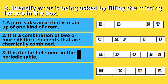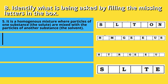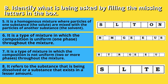Instruction B: Identify what is being asked by filling in the missing letters in the box. 1. A pure substance that is made up of one kind of atom. 2. It is a combination of two or more distinct elements that are chemically combined. 3. It is the first element in the periodic table. 4. It refers to materials that contain two or more chemical substances dispersed among each other with no chemical reactions occurring. 5. It is a homogeneous mixture where particles of one substance, the solid, are mixed with the particles of another substance, the solvent.